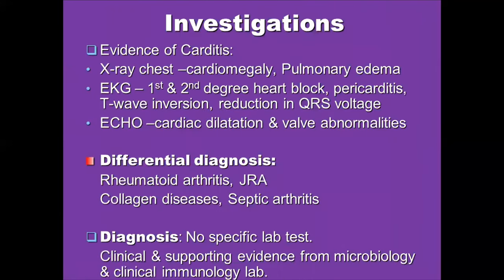Other investigations target evidence of carditis: X-ray shows cardiomegaly and pulmonary congestion; ECG shows first- and second-degree heart block and features of pericarditis; echocardiogram shows cardiac dilation and valve abnormalities. The major differential diagnoses for acute rheumatic fever include rheumatoid arthritis, juvenile rheumatoid arthritis, collagen disease, and septic arthritis.